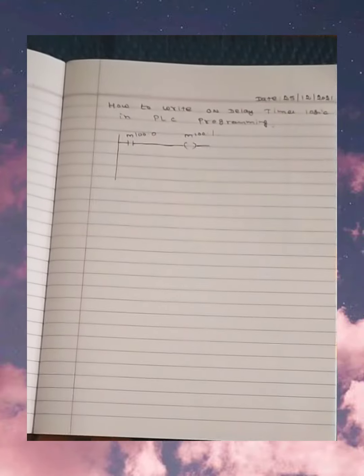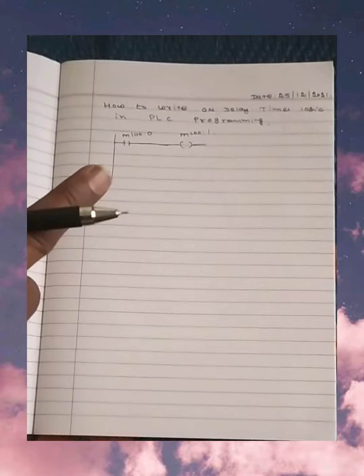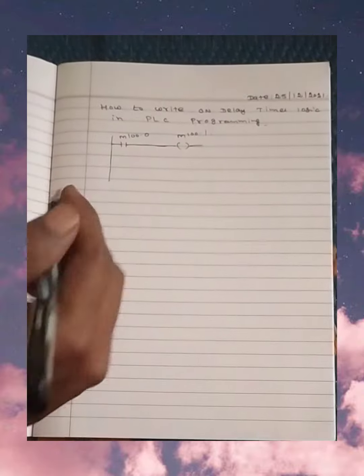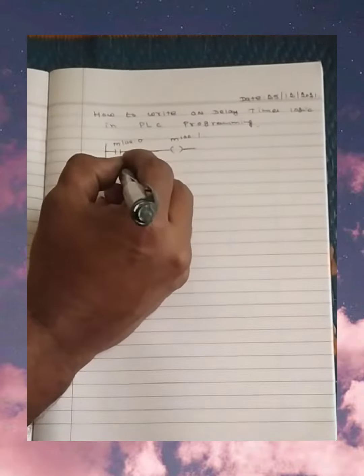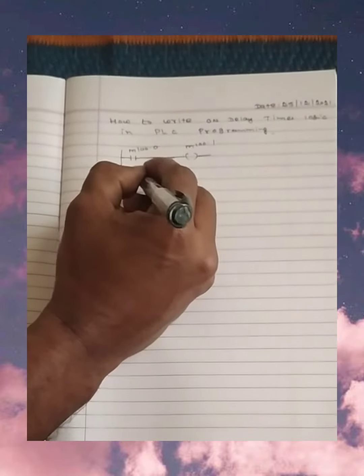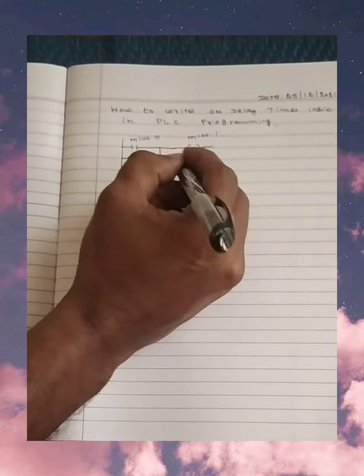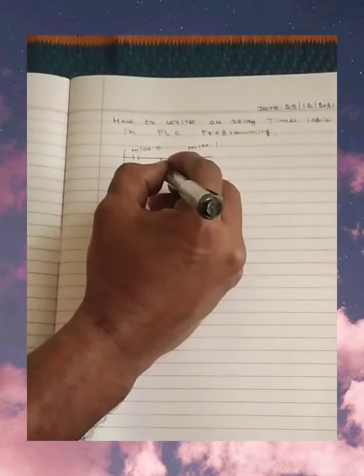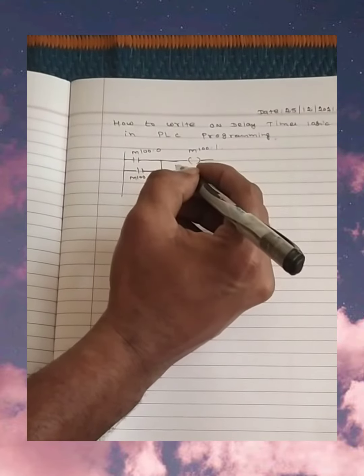So when I turn on my push button, my M100.1 will get on. To keep it remain on, I am putting the latch signal of M100.1. After that, at the same time, I am turning on one timer.